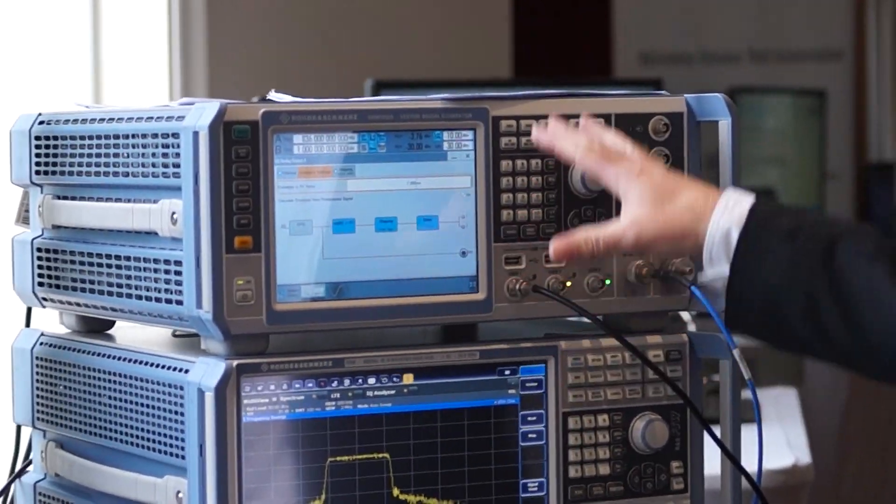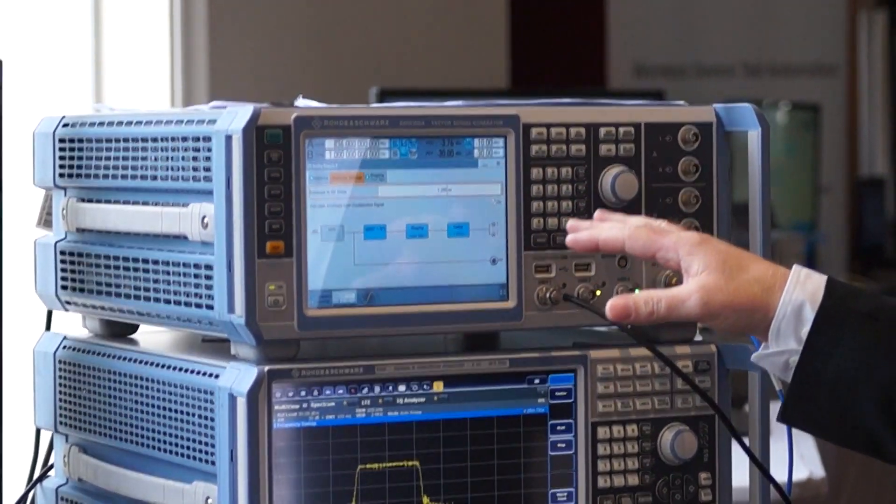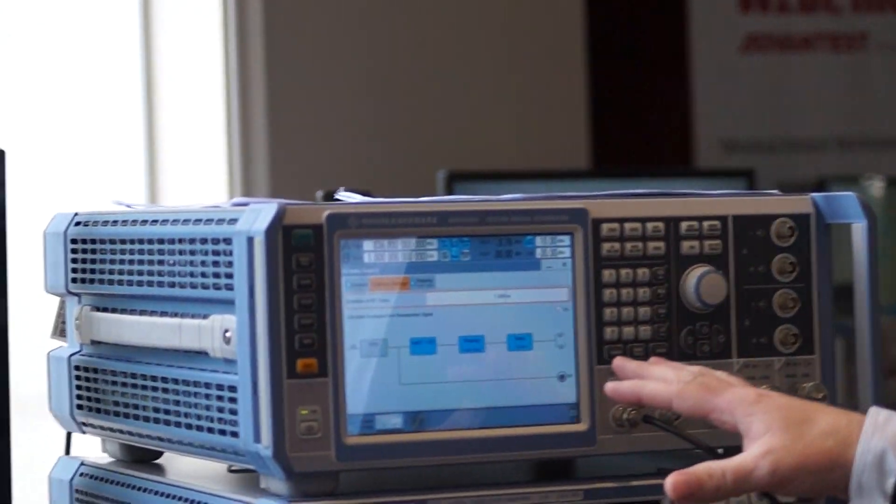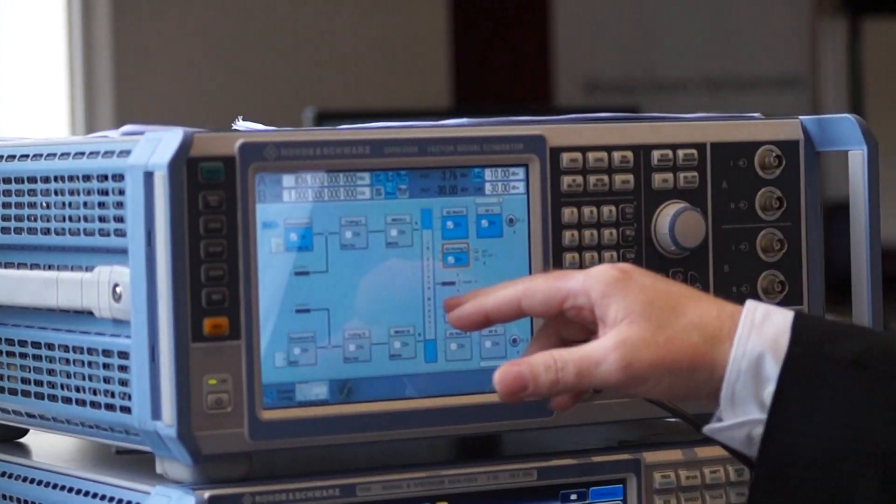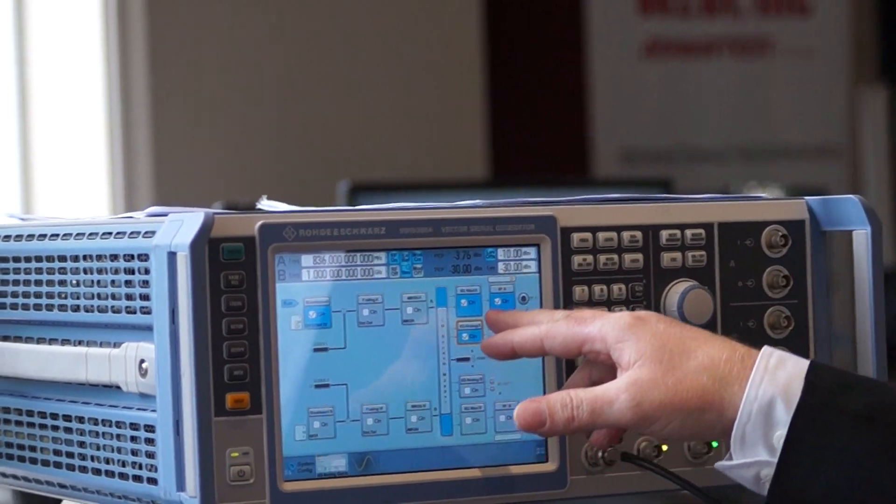We'll start with the generator. What we have is our vector signal generator, SMW200A. And for envelope tracking, we really just start with the basic single path vector signal generator, but we provide some other things.